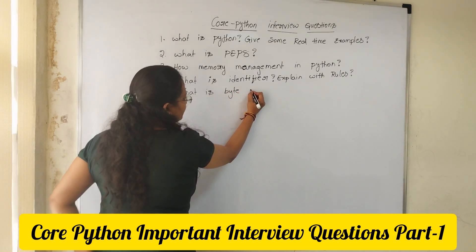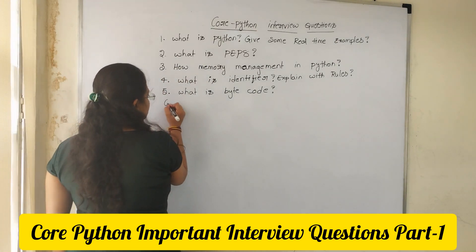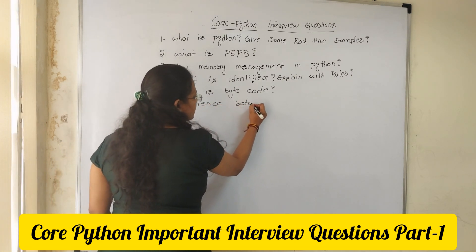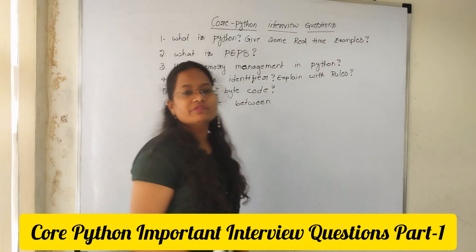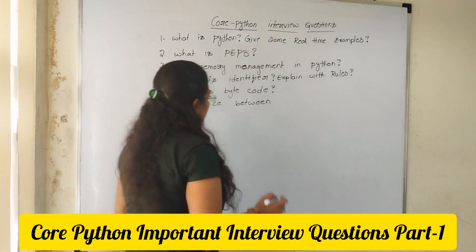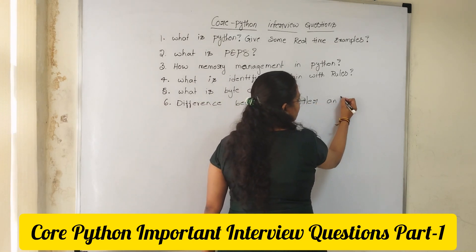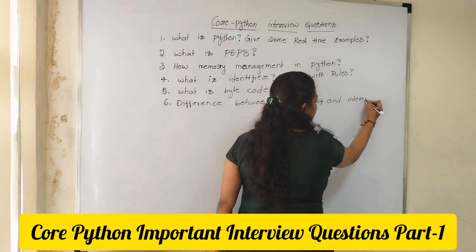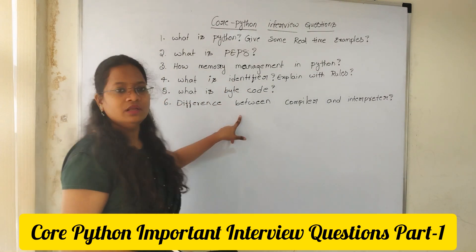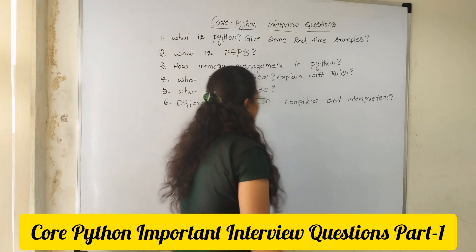The fifth question is: what is bytecode in Python? Python also has bytecode, so you need to explain about that. The sixth question is the difference between compiler and interpreter — this is very important. Most people think Python is only an interpreted language, but Python internally uses a compiler. Python internally uses a compiler but externally shows as an interpreter.